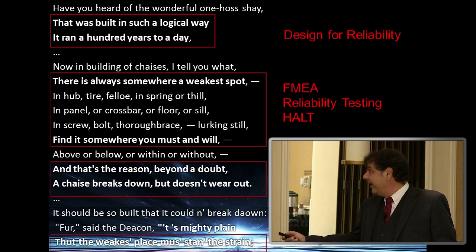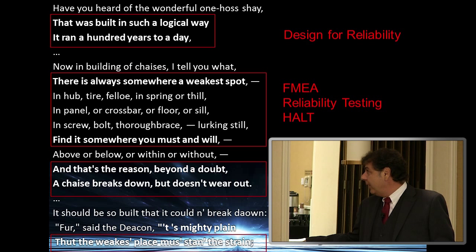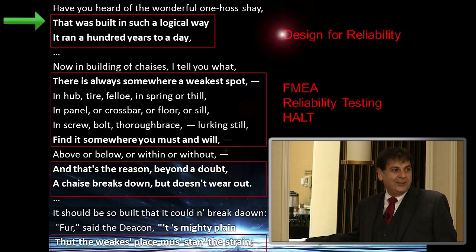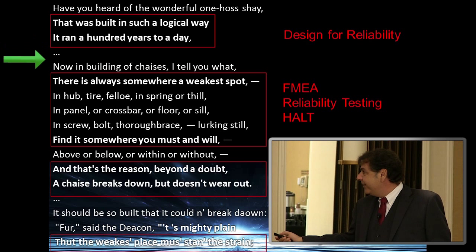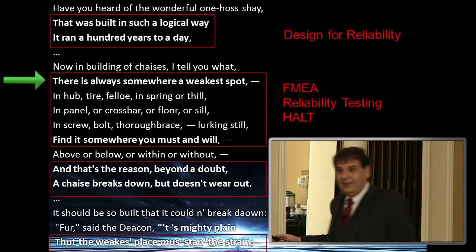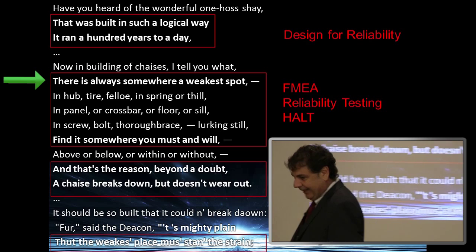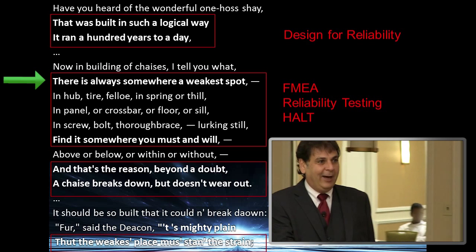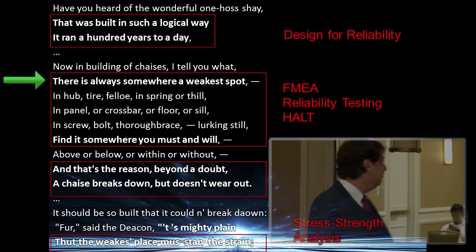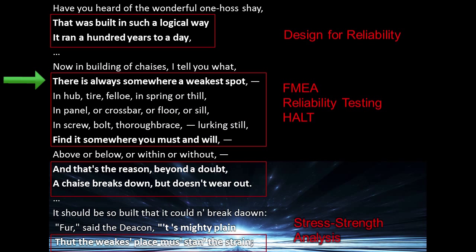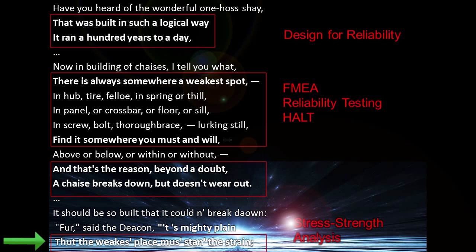We're talking about the 1800s. One of the things that comes up front is building in such a logical way that it can run 100 years — pretty much what we call design for reliability. Then you see there's always a weakest spot. You've got to find that weakest spot, because if you don't, that's how it fails rather than wears out. Our objective is to make it wear out and last long enough. FMEA, reliability testing, HALT — kind of continues through different phases. There's always a weakest place, and you've got to find that. Stress-strength analysis.